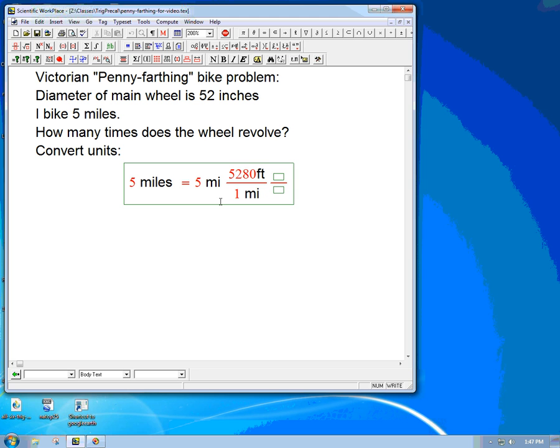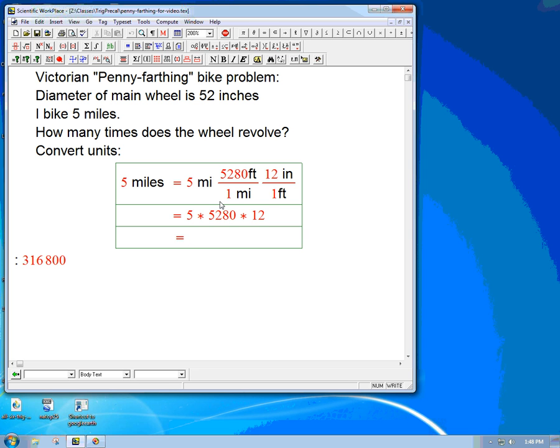Then we can go to inches directly. There's 12 inches in one foot. I'll get it to calculate it: five times 5280 times 12 equals 316,800 inches. So that's how many inches that we went. That's a lot of inches.